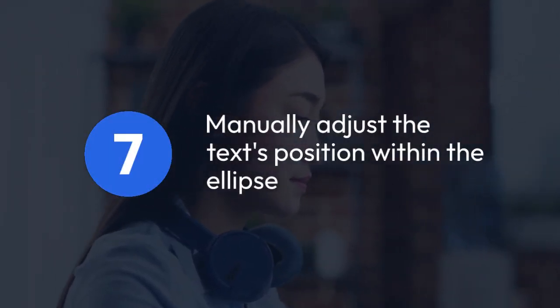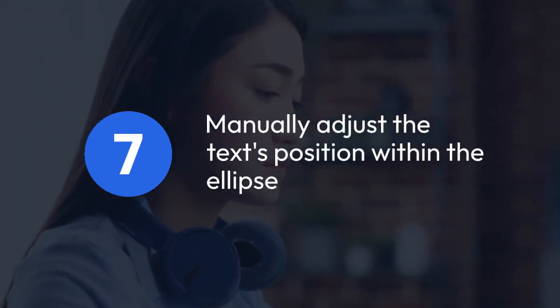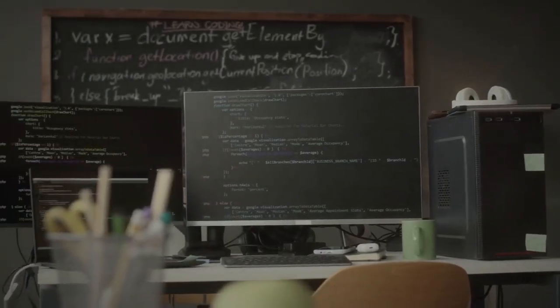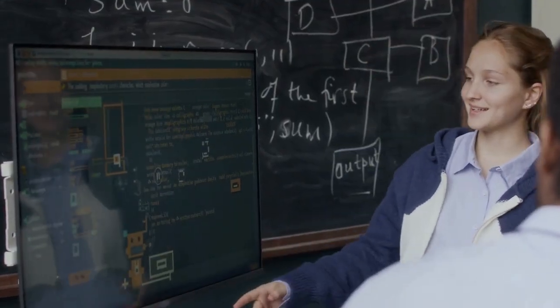If the text is not precisely where you want it, you can manually adjust the text position within the ellipse. You can slightly move the text box on the ellipse by dragging with the selection tool. It's a little fiddly, but you'll get the hang of it quickly.